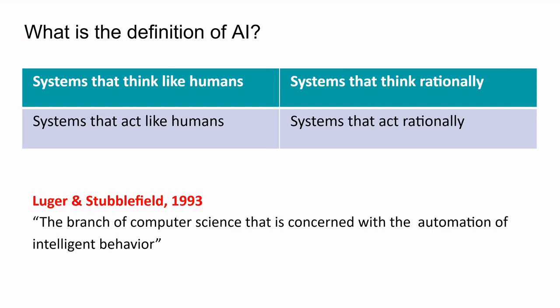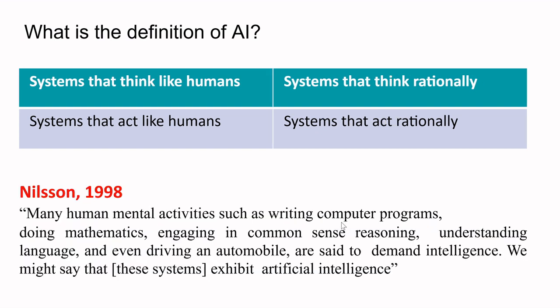The fourth definition: the branch of computer science concerned with automation of intelligent behavior. The difference between normal intelligence and artificial intelligence is that the process should become automatic — the thinking process and the behaving process should get automatic. The fifth definition involves human mental activities such as writing computer programs, doing mathematics, engaging in common sense reasoning, understanding language, and even driving an automobile — all of which are said to demand intelligence.